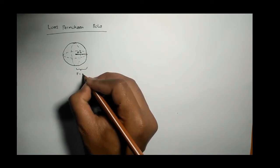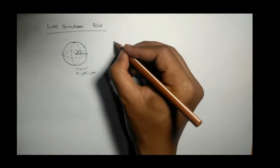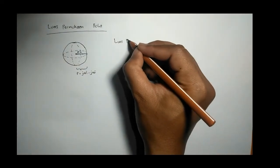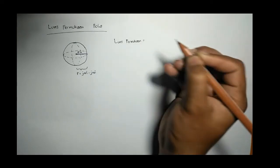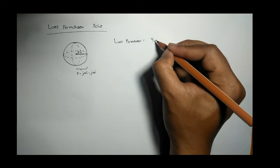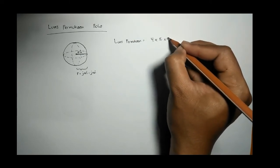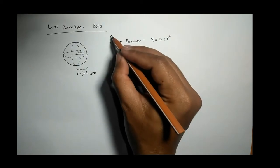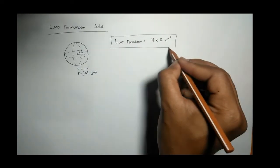Ya jari-jari dari pusat ke tepi. Ingat kadang di soal tidak diketahui jari-jari tapi diketahui diameter. Jadi luas permukaan itu adalah, ini lebih mudah rumusnya, 4 dikali π R kuadrat.